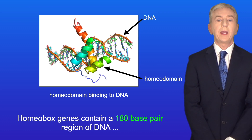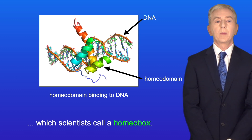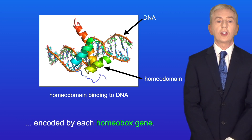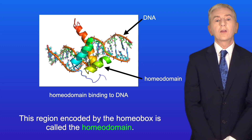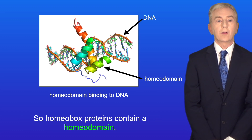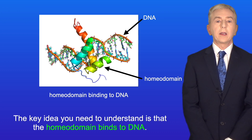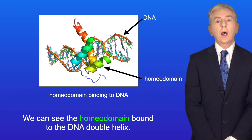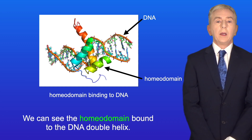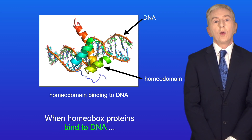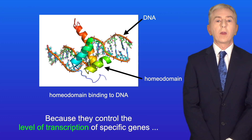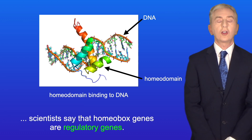Homeobox genes contain a 180 base pair region of DNA, which scientists call a homeobox. The homeobox encodes a 60 amino acid region in the protein encoded by each homeobox gene. This region encoded by the homeobox is called the homeodomain. So homeobox proteins contain a homeodomain. The key idea is that the homeodomain binds to DNA, and homeobox proteins act as transcription factors. When homeobox proteins bind to DNA, they can increase the transcription of specific genes. Because they control the level of transcription of specific genes, scientists say that homeobox genes are regulatory genes.